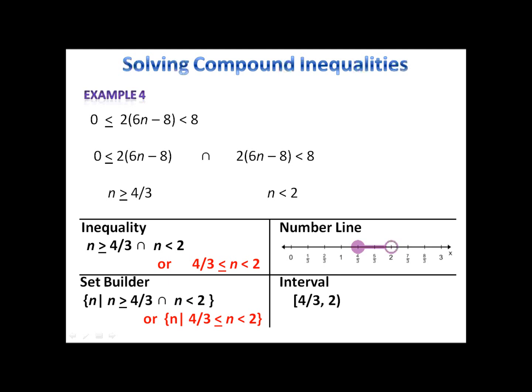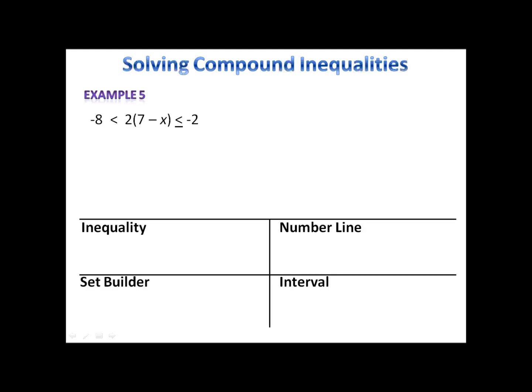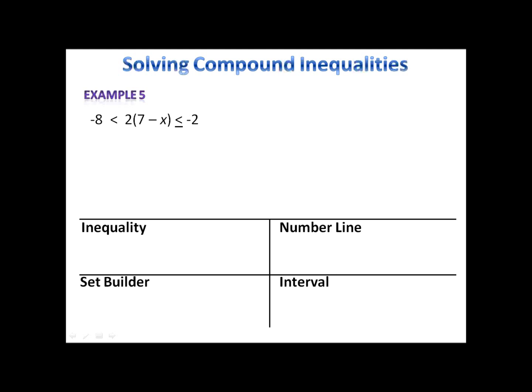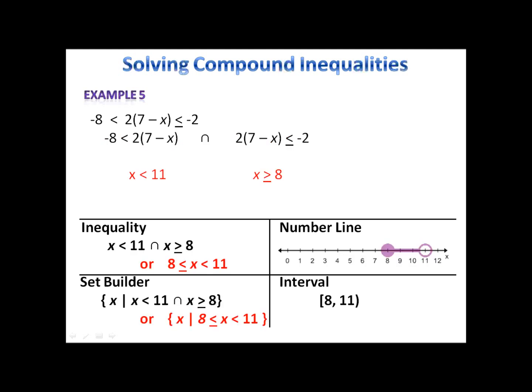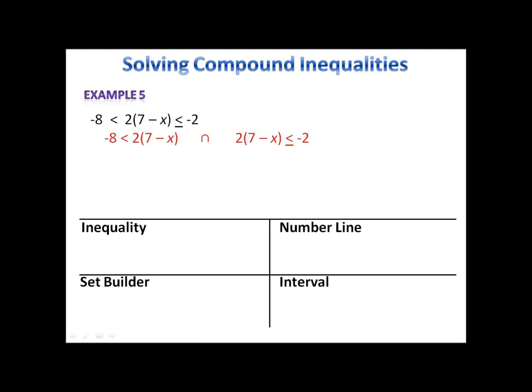Example 5 is our final example for today. I'd like for you to pause the video here to see if you can write the two separate inequalities. Once you've written the two separate inequalities, solve both sides of them — don't write the sets yet, just solve the inequalities then come back and check your work. Here are the two inequalities: negative 8 is less than 2 times 7 minus x, intersected with 2 times 7 minus x is less than or equal to negative 2. Solving each of those gives x is less than 11 and x is greater than or equal to 8.